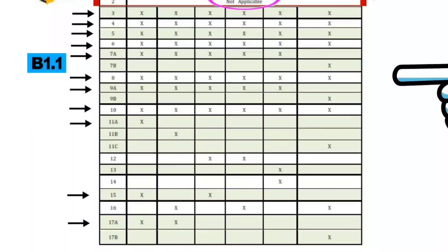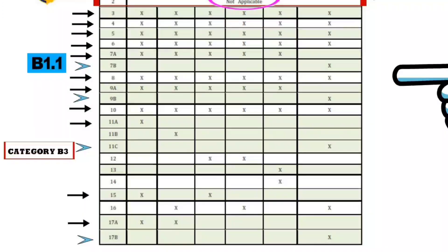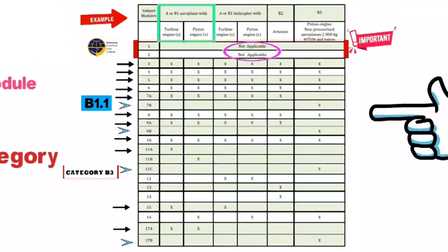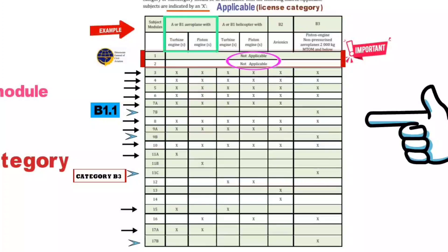Note the unique modules 7B, 9B, 11C, and 17B — these modules are specially for the B3 category. By looking at this table, you can easily understand the modular requirements for your respective categories.